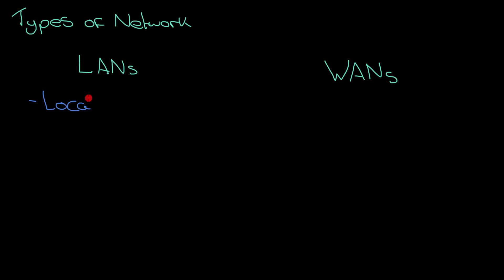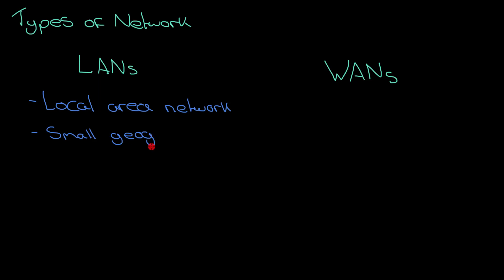So let's start with a LAN — a local area network. That means it covers a small geographical area, so a small space. That could be a building like your school, a hospital, or an office block. You will have a local area network in your school connecting all your computers together, even though you might think your school is pretty large. Overall it's a small geographical area, especially when we compare it to WANs.